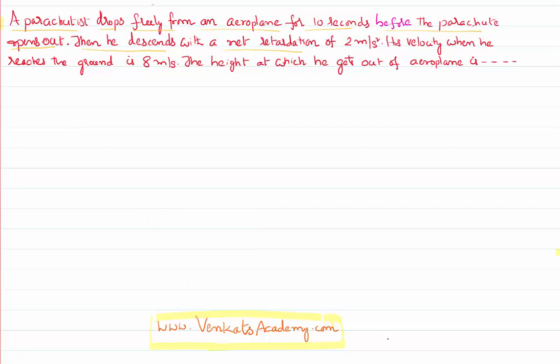After opening the parachute, he descends with a net retardation of 2 meters per second squared. His velocity on reaching the ground is 8 meters per second. We need to calculate the height from which he jumped from the airplane with the parachute.